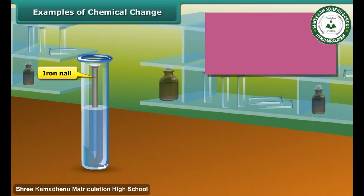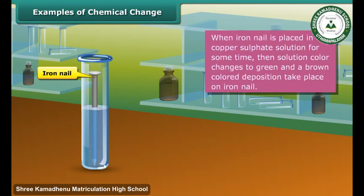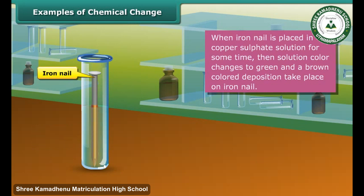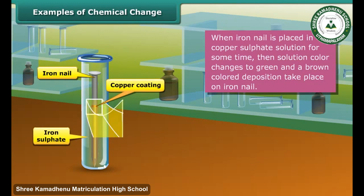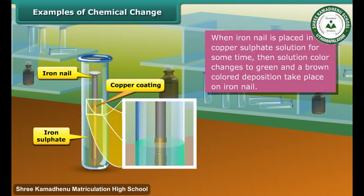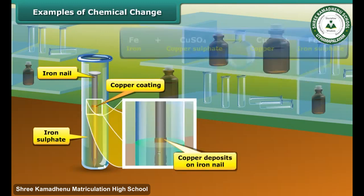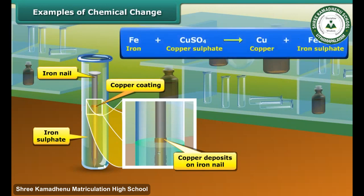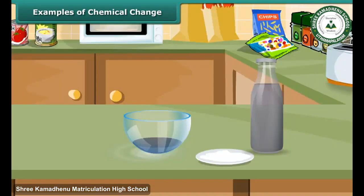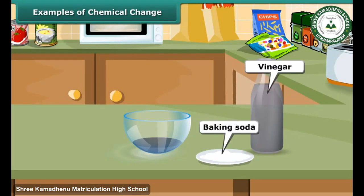You will see a blue colored solution — put an iron nail in it. After some time, the color of the solution changes to green and the nail is covered by a brown film. These changes are due to the formation of iron sulfate solution and copper.